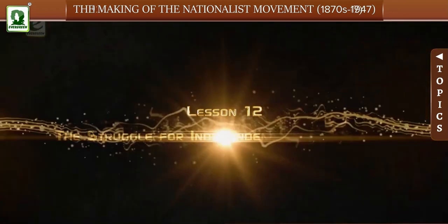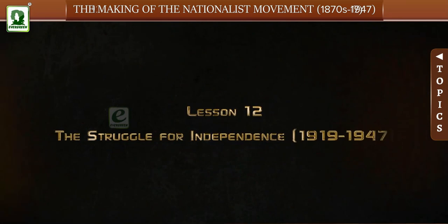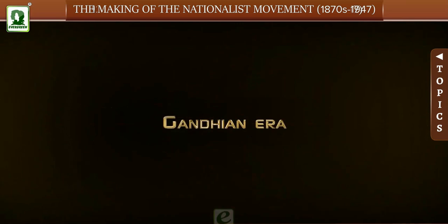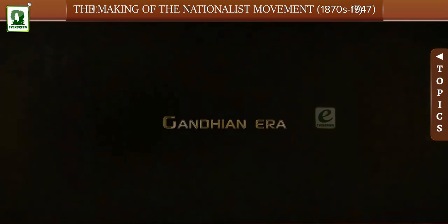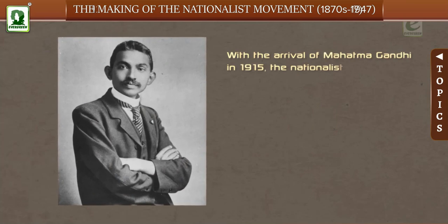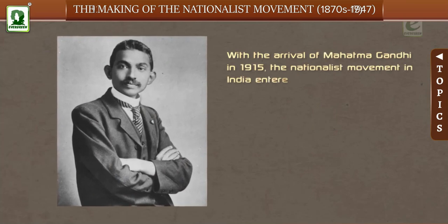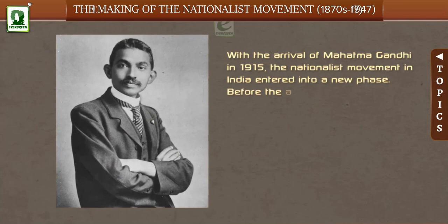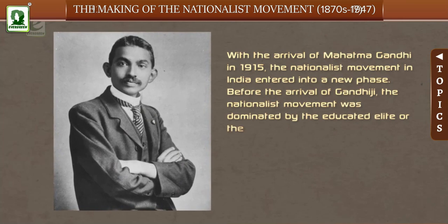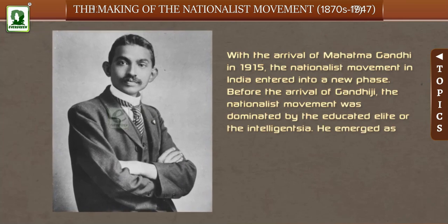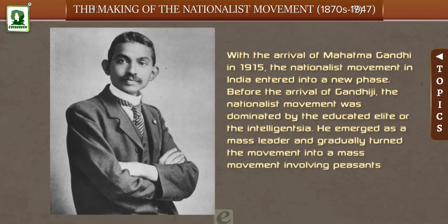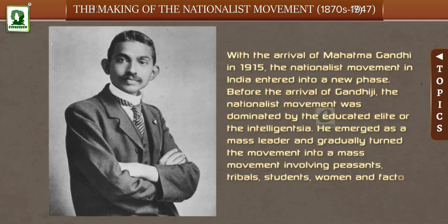The Struggle for Independence 1919–1947 — Gandhian Era: With the arrival of Mahatma Gandhi in 1915, the Nationalist movement in India entered a new phase. Before Gandhiji, the Nationalist movement was dominated by the educated elite or the intelligentsia. He emerged as a mass leader and gradually turned the movement into a mass movement involving peasants, tribals, students, women, and factory workers.